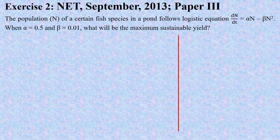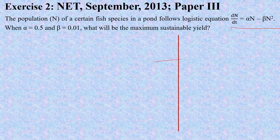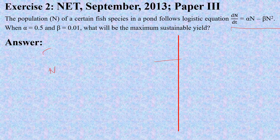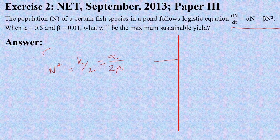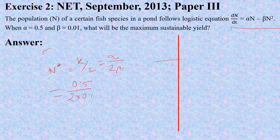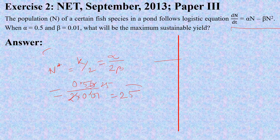Now we go for another exercise: the population of a certain fish species in a pond follows a logistic equation. We already know that the maximum yield N* equals K by 2, which is alpha by 2·beta. With alpha equal to 0.5 and beta equal to 0.01, the answer will be 25.